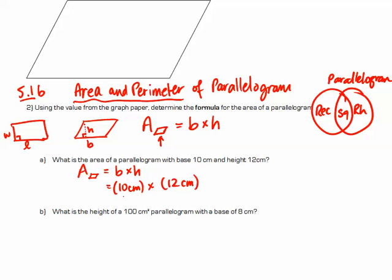So once we multiply these together, we multiply the numbers together, so 10 times 12 is 120. And centimeters times centimeters, if we remember from earlier chapters, is centimeters squared, because it's 2 centimeters multiplied by each other. So the area of this parallelogram is 120 centimeters squared.